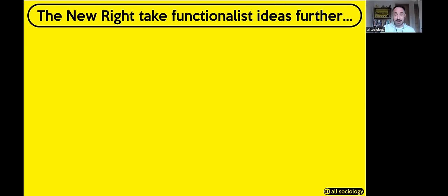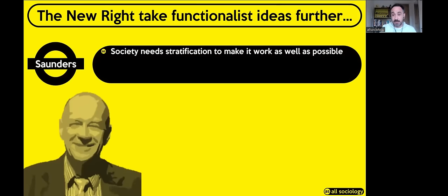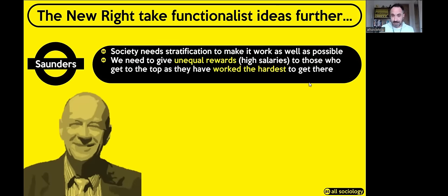Now let's look at the New Right view very briefly. The key person here is Peter Saunders. Saunders basically follows the Functionalist argument that you need stratification for society to work as well as possible, but takes it one step further. He says we absolutely need to give unequal rewards — incredibly high salaries to those who work at the top level. This incentivizes and encourages everyone to strive for those top-paying jobs.